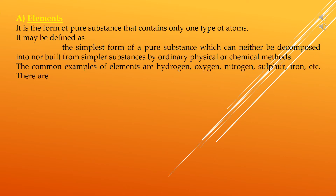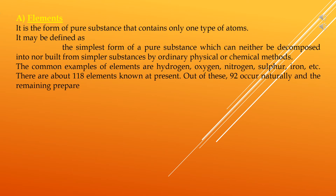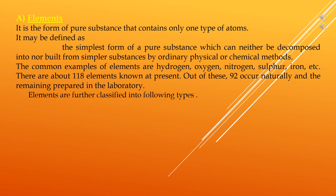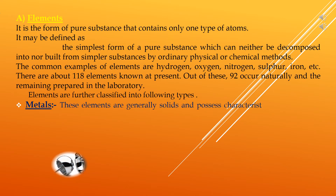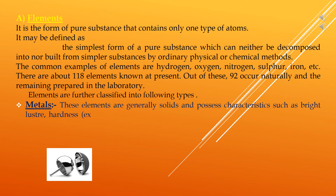There are about 118 elements known at present; out of these, 92 occur naturally and the remaining are prepared in laboratories. Elements are further classified into the following types. The first type is metals — these elements are generally solids and possess characteristics such as bright luster, hardness (except mercury, which is a liquid), and the ability to conduct electricity and heat.